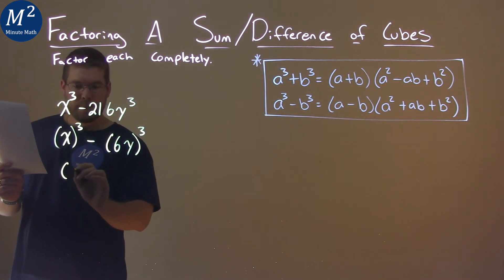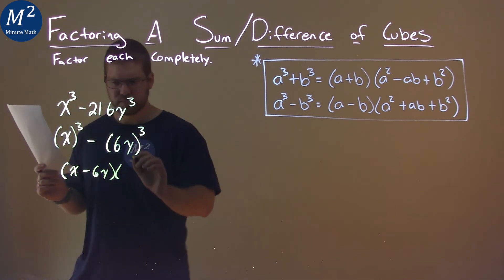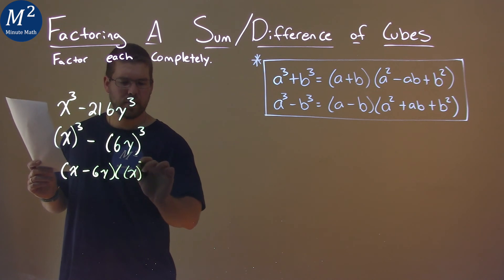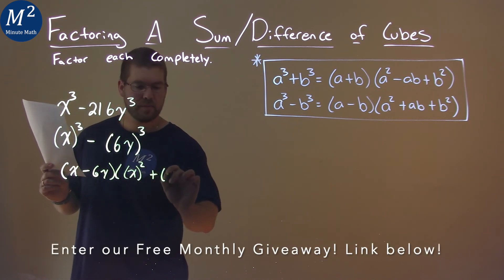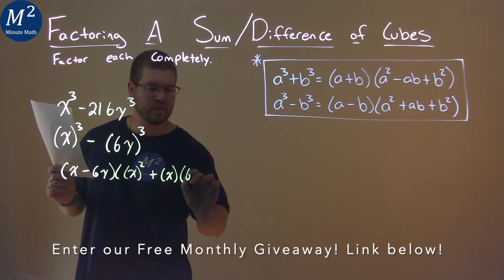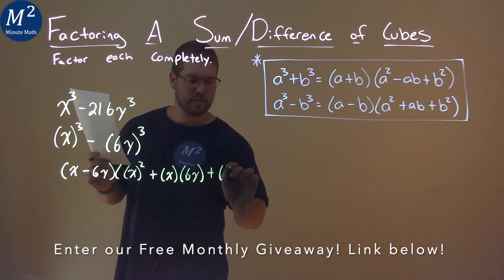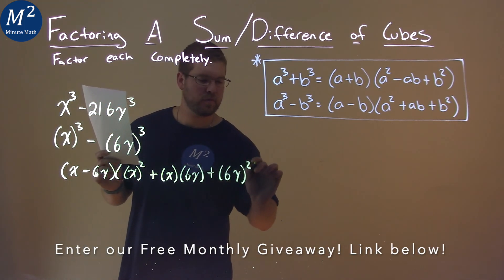a, which is x minus 6y, times x value all squared, plus x times 6y, plus 6y all squared.